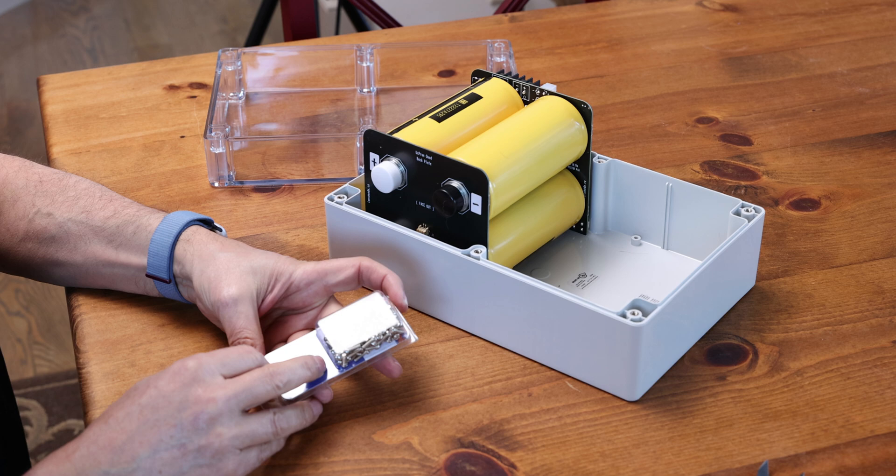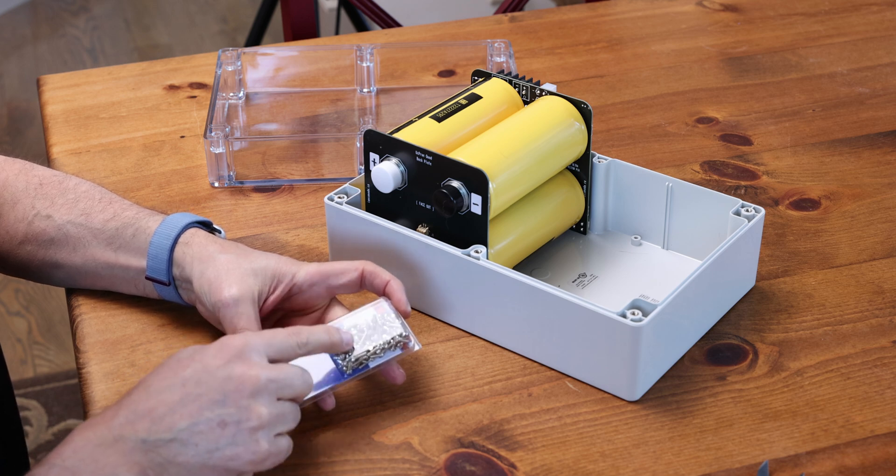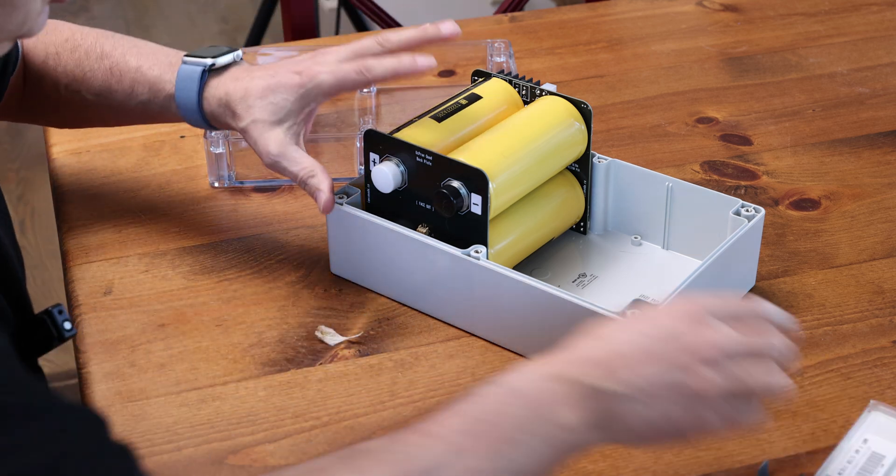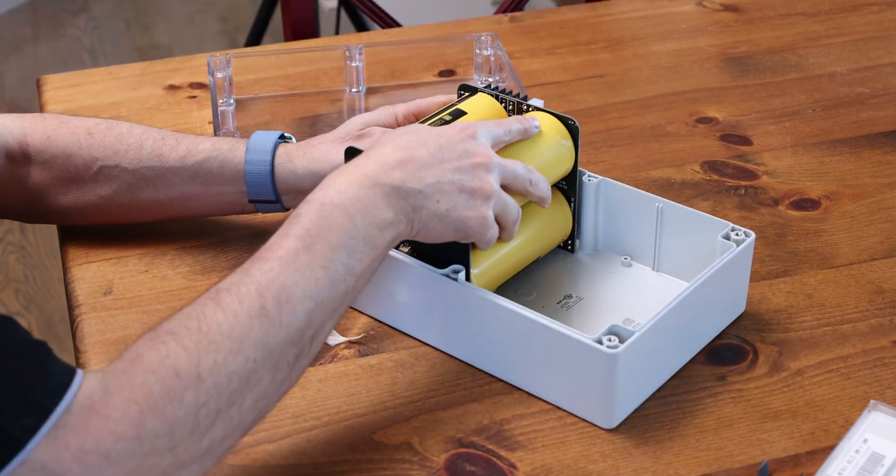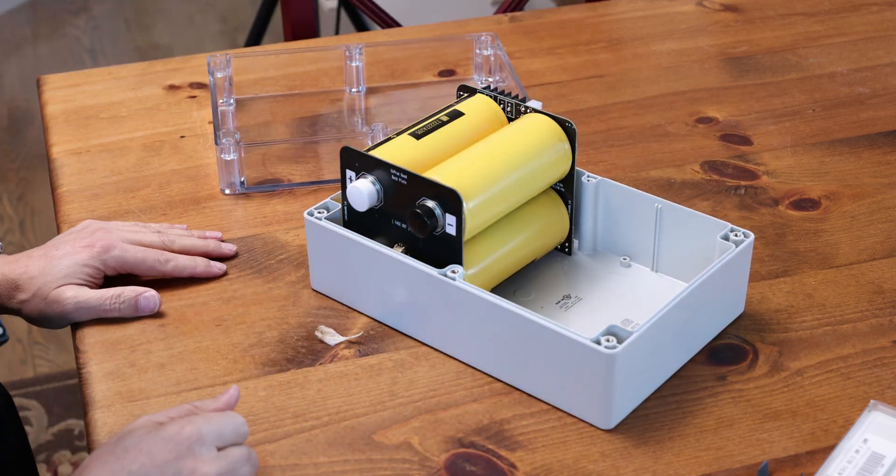You can get them from a hardware store or I'll put a link on Amazon you can get those really cheap and they come in a big case for being next to nothing. These are M3 screws and you just have to drill four holes here and put your screws in and that's going to keep this firmly secure.